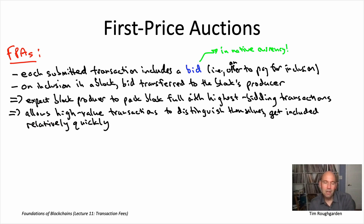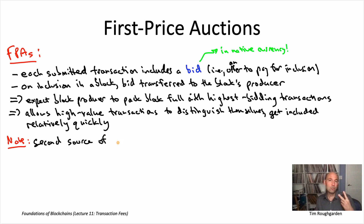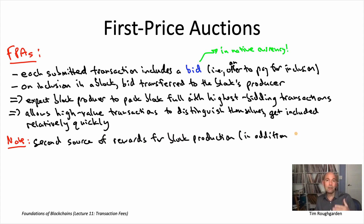So that's a first price auction — simple enough. Users submit bids along with their transactions, and block producers typically select the transactions offering the highest bids. Now, these rewards to the block producer from transaction fees are additive with the block rewards we discussed in lecture 10. A block producer gets the sum of both: the block reward — newly minted coins, like 6.25 bitcoins or two ether per block — and the transaction fees, which are a transfer of existing coins from transaction creators to the block producer. This is really a second stream of revenue, additive with the block reward.